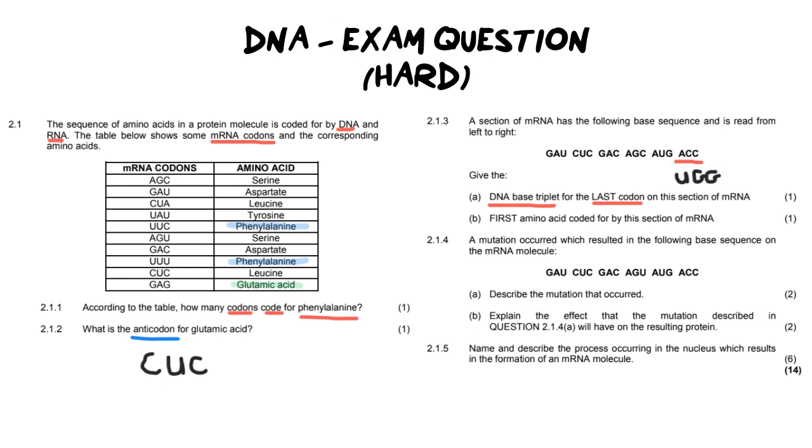The next question says give the first amino acid coded for by this section of mRNA. So we go to the first codon which is G-A-U. And now we're going to look for G-A-U in our table. So I'm going to take my highlighter and I'm going to find G-A-U. All right. So G-A-U, there it is. And that is aspartate. So our answer is going to be aspartate.